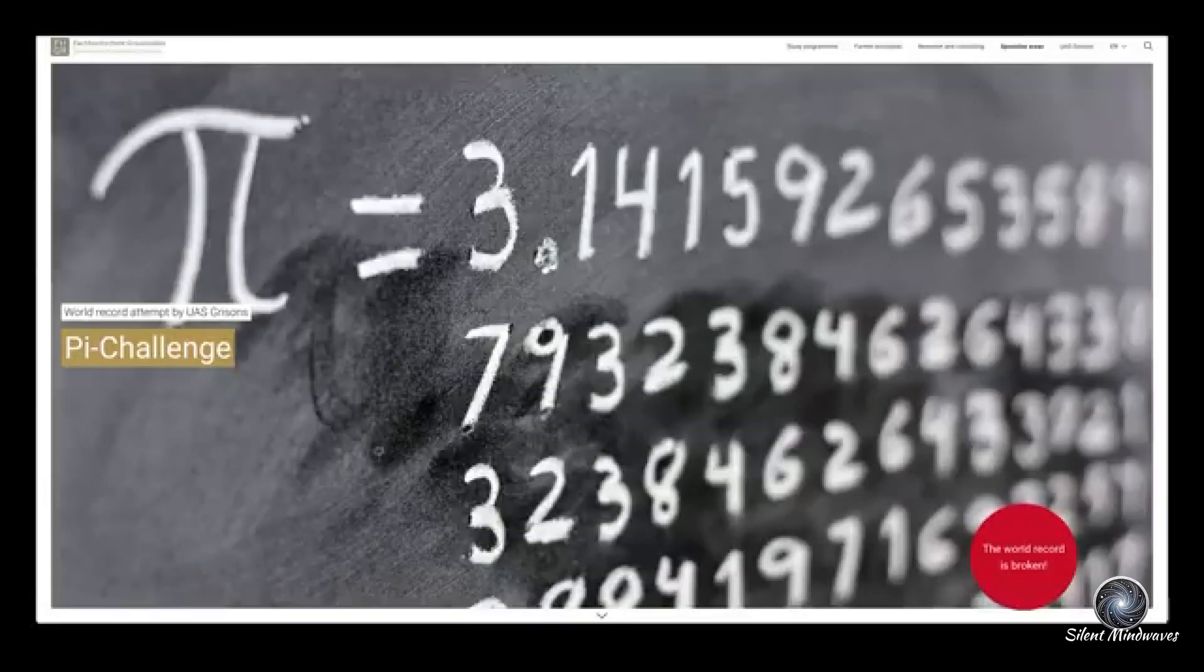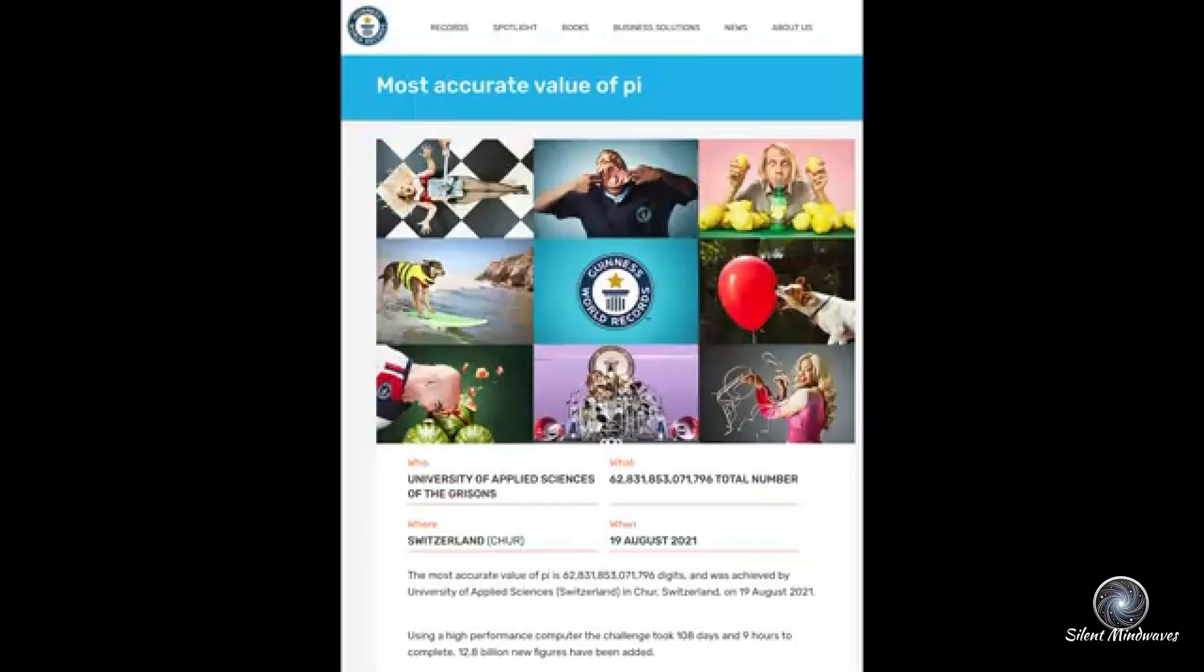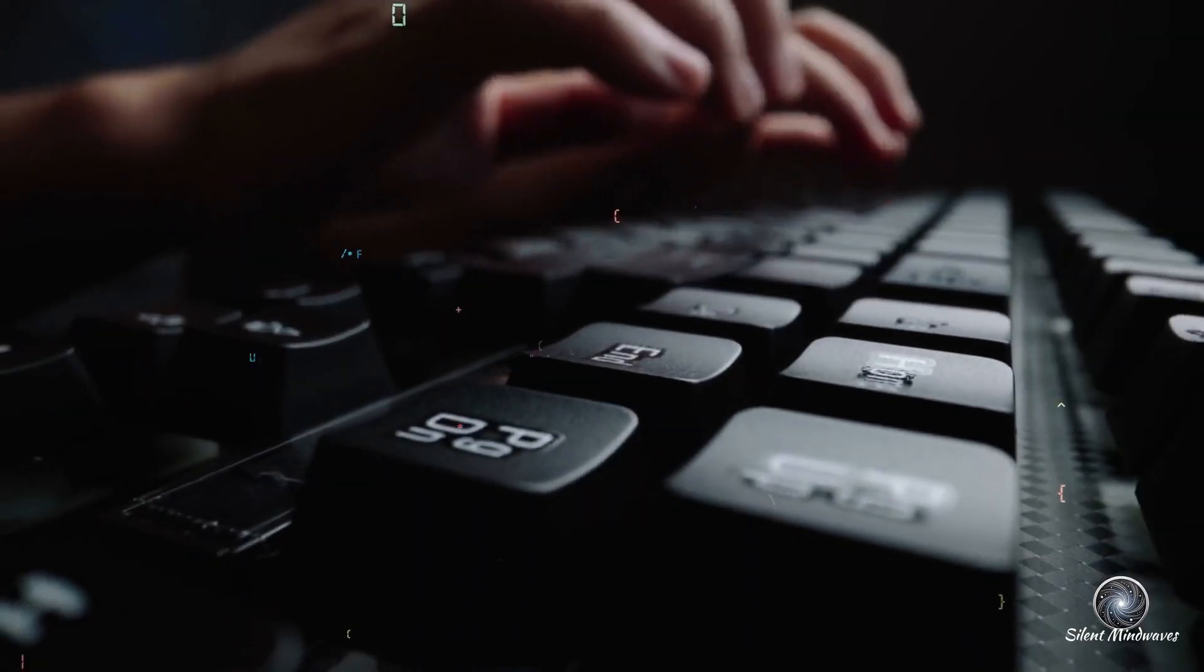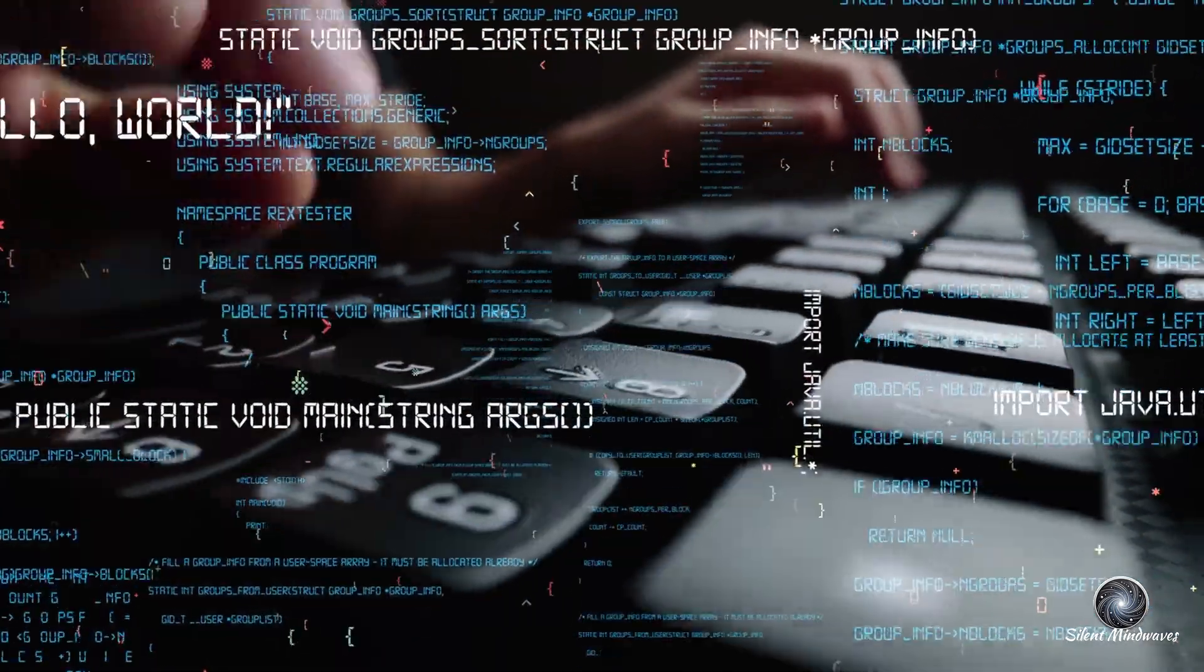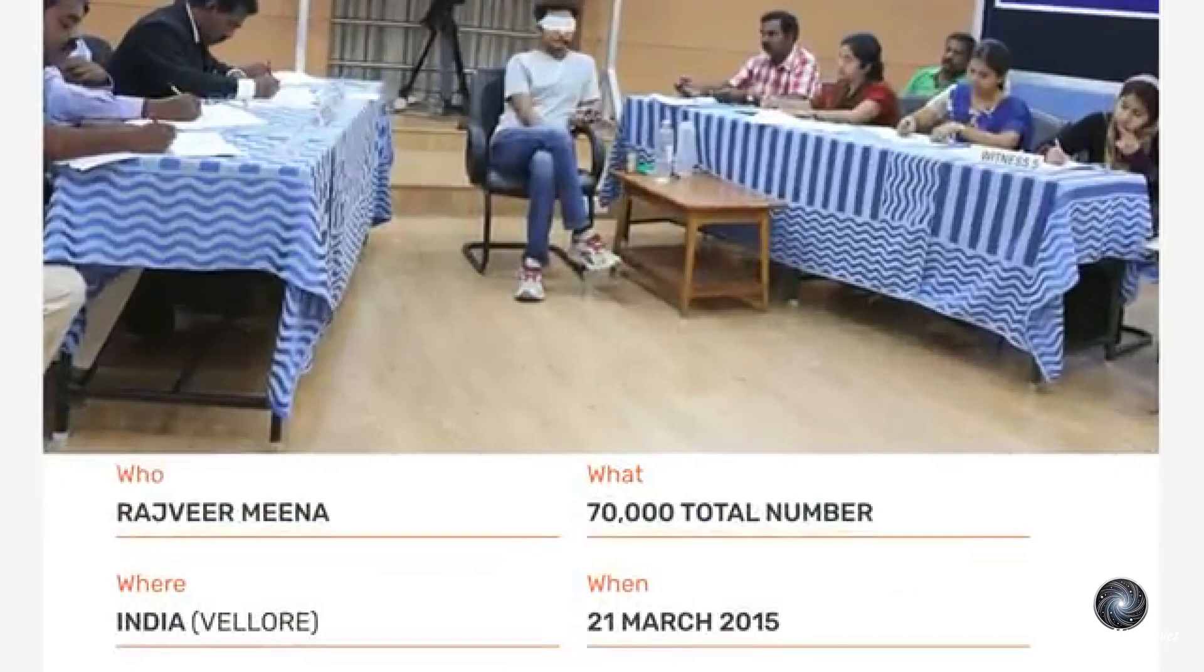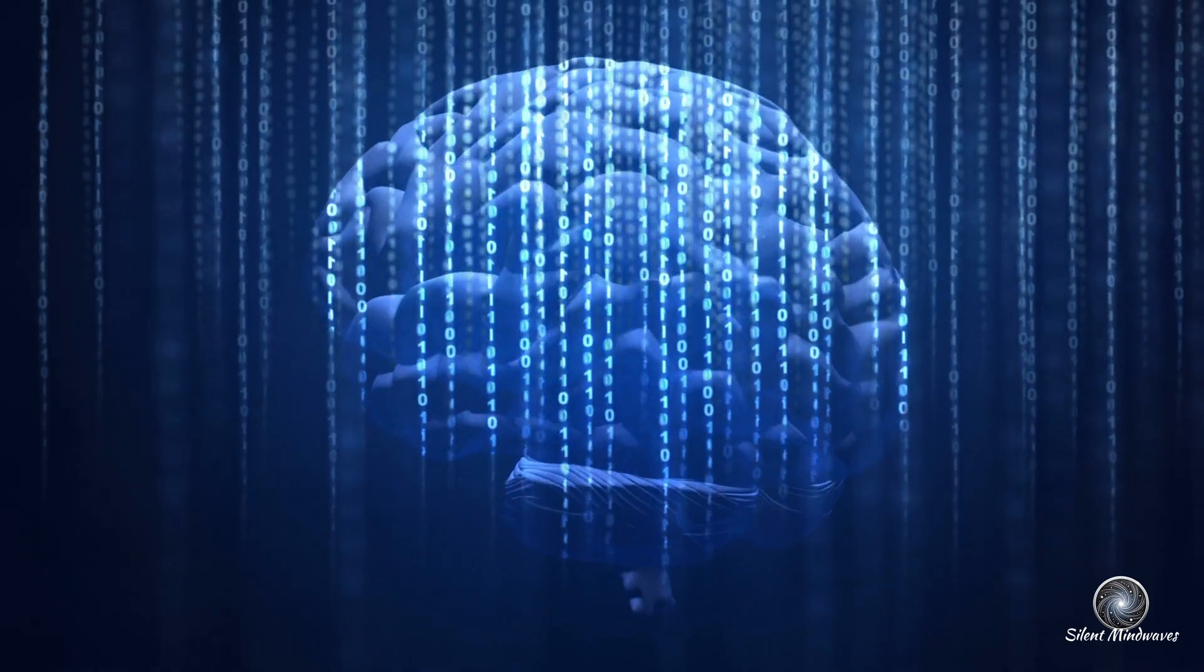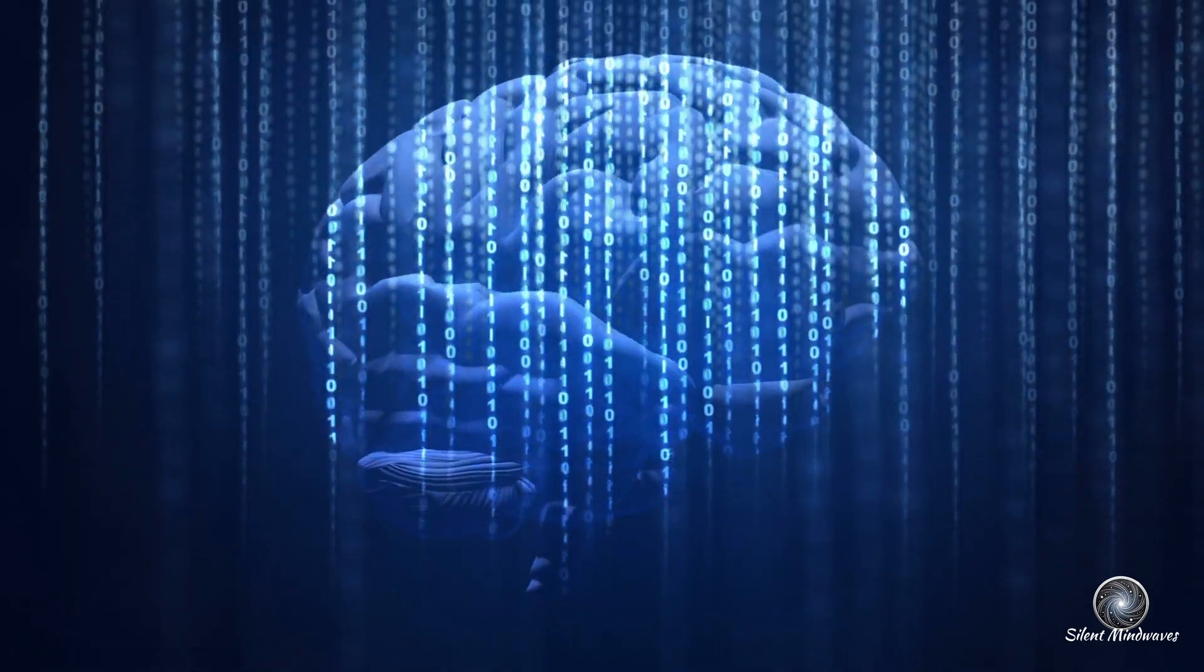Just last summer, a computer in Switzerland broke a record by calculating 62.8 trillion digits of pi in 108 days. That's a huge leap for us, but for an infinite number like pi, it's just a tiny step. Do we really need to calculate so many digits of pi? After all, even the people with the best memories have only managed to memorize up to 70,000 digits so far. For practical purposes, the answer is no. Those who memorize pi's digits usually do so as a hobby or a mental exercise.